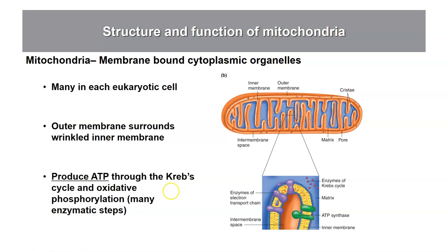We're not going to go into the details of the biochemistry, but mitochondria are the main source of ATP in eukaryotic cells. So anything that reduces the amount of ATP production in a mitochondrion by mutation is going to negatively impact the amount of ATP that can be produced, and the amount of energy available to the cell and to the organism.